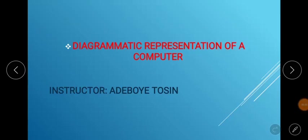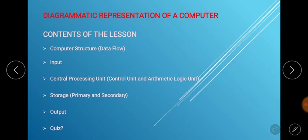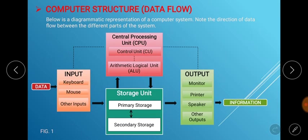Hi everyone. In our ICT lesson today we shall be taking a look at the diagrammatic representation of a computer. At the end of today's lesson, students should be able to understand the computer structure — that's the data flow process of the computer — the input units, what the input unit does, the central processing unit and its types, how the CPU operates, the storage units and their types, and also the output units' operation.